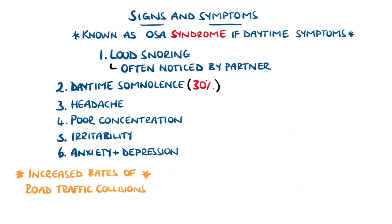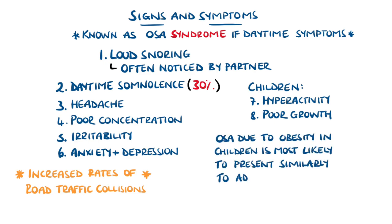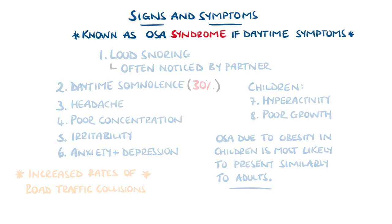In children, obstructive sleep apnea can actually manifest as hyperactivity, leading to an incorrect diagnosis such as attention deficit hyperactivity disorder, and the interrupted sleep can impair growth. This is most commonly the case in children with excess lymphoid tissue, but in cases caused by obesity, there's often a presentation similar to adults.